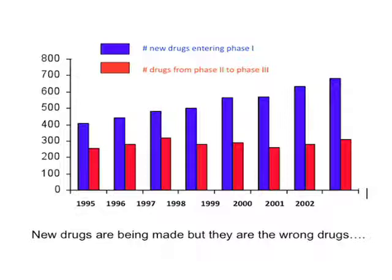This graph illustrates another problem. What you see in blue are the number of compounds that have entered phase one over a range of years, and they are going up — we are making more potential drugs. What you see in red are the compounds that made it through phase one and two and are now in phase three, meaning they show that they work. And this number is not going up. So we are making more drugs, but they are the wrong drugs — they don't work. Problem two is we have to be better at choosing the successful therapeutic targets we spend our energies on.